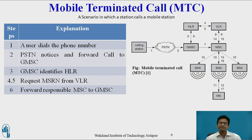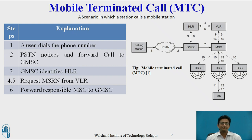In steps four and five, the HLR requests the MSRN (Mobile Station Roaming Number) from the VLR. If the mobile station is present in a new Visitor Location Register — that is, a new location area — then the MSRN is required. In step six, the responsible MSC is forwarded to the GMSC — whichever MSC the VLR is present in, that MSC is forwarded to the GMSC.